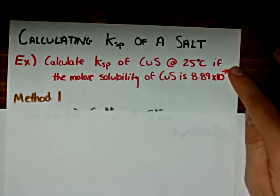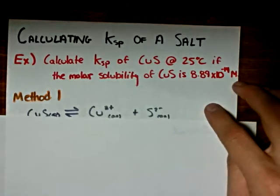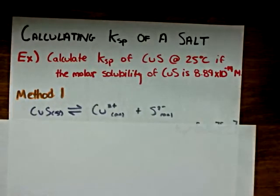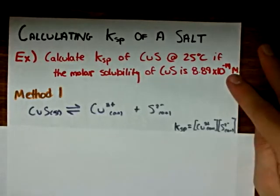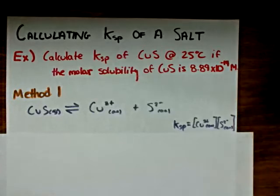In the first method, we're going to use an ICE table to solve this problem. This is the dissociation equilibrium that's formed when copper sulfide is placed in water. We get a copper 2+ ion and a sulfide ion, and the equilibrium expression will be the product of the copper 2+ ion and the sulfide ion.